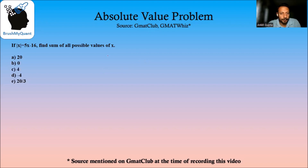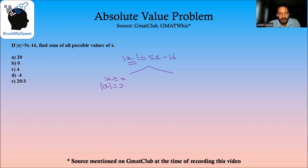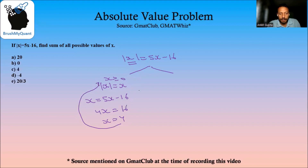We'll use the concepts of absolute value first. So mod of x is equal to 5x minus 16. We'll take two cases. First case: whatever is inside the absolute value, we'll assume that is greater than or equal to 0. So we can open mod x directly as x, giving us x is equal to 5x minus 16, or 4x is equal to 16, so x is equal to 4, which satisfies our condition of x greater than or equal to 0. So this is one possible solution.